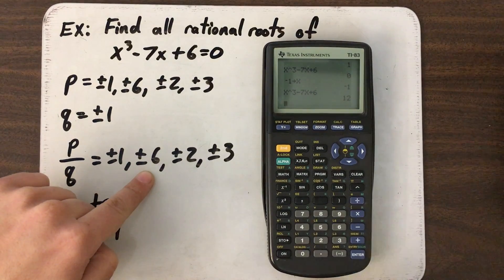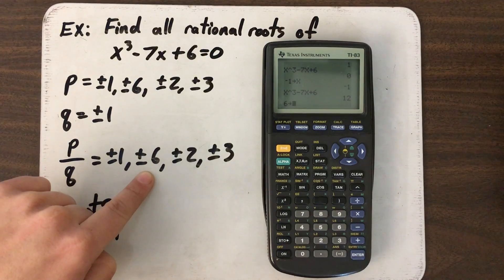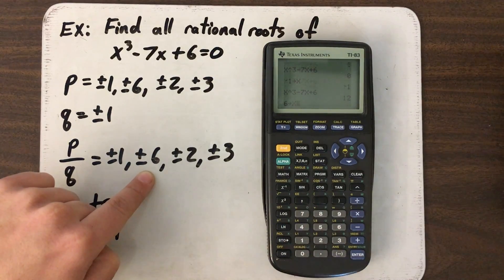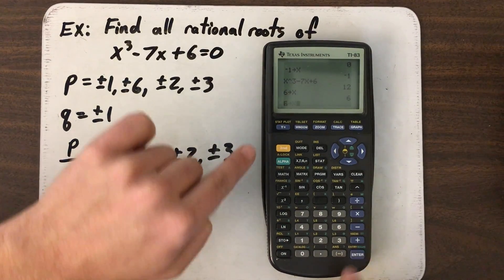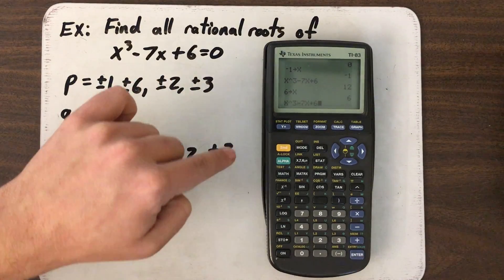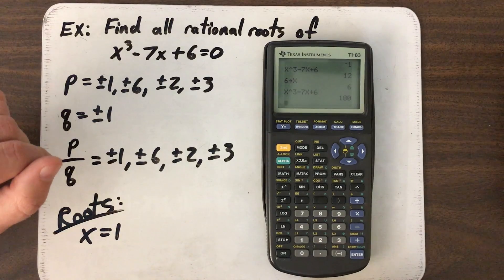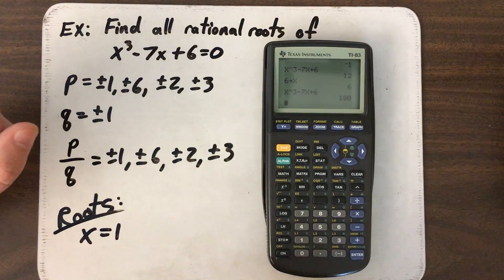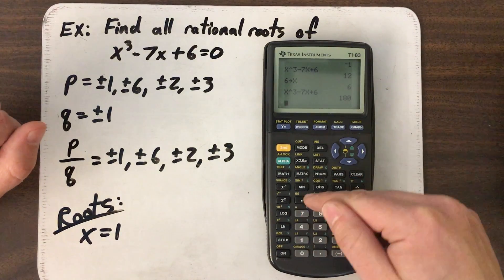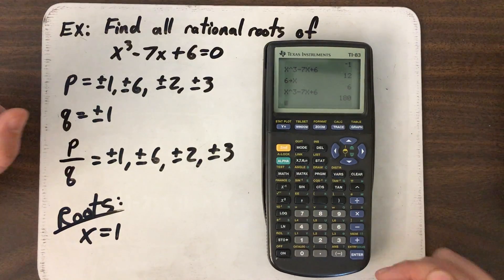So I go on to 6. So I go 6, store, X. Press enter. Second, enter. Calls up that. Second, enter. Calls up my equation. Hit enter. 180. I guess 6 isn't a root. But see how quickly I'm able to test my values just by hitting store, second enter, second enter. So I'm going to go a little quicker.